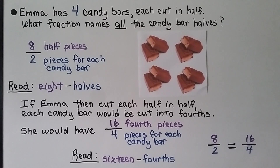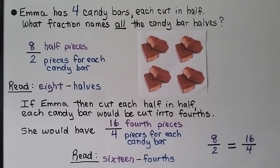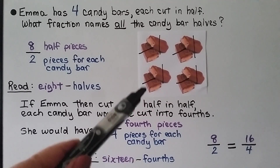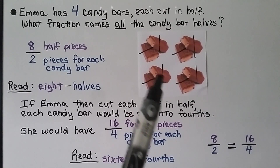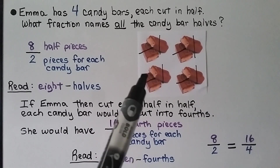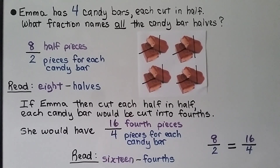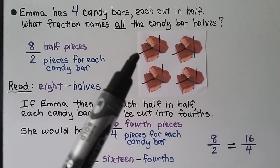If Emma cut each half in half, each candy bar would be cut into fourths. If we took each of these half pieces and cut them in half, then the whole candy bar would be cut into one, two, three, four pieces — cut into fourths. And she would have 16 one-fourth pieces.